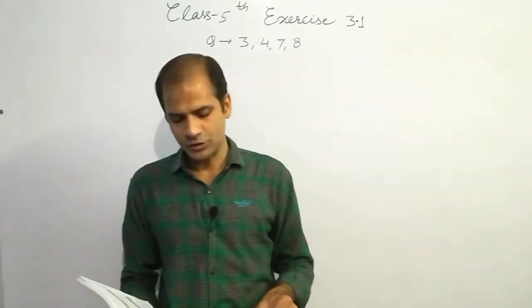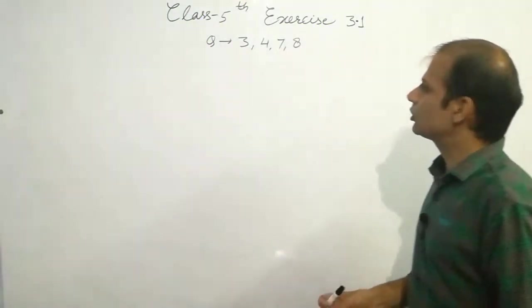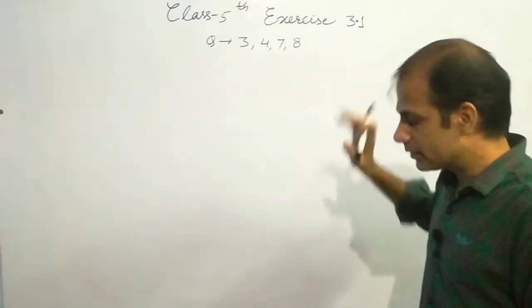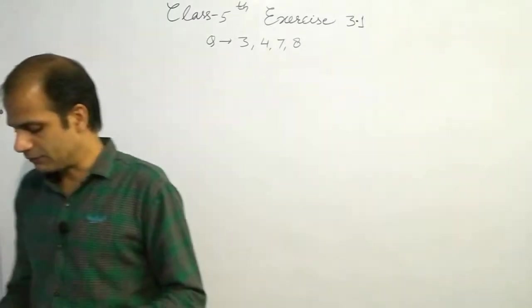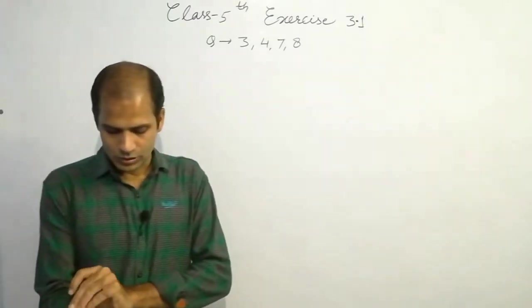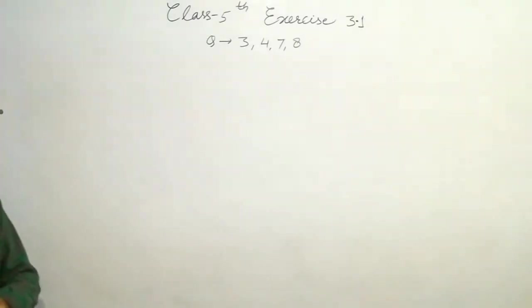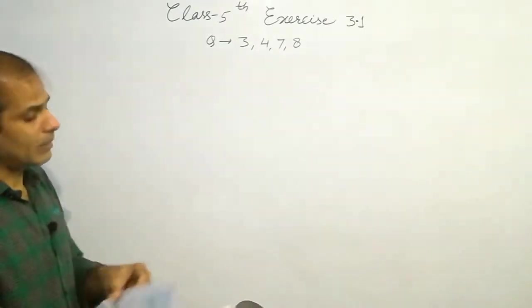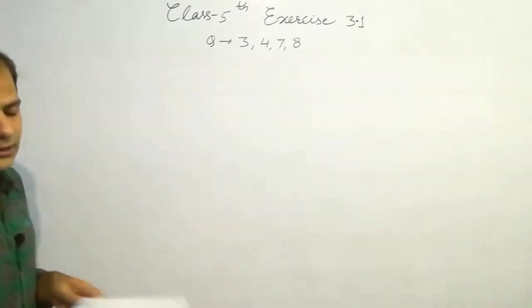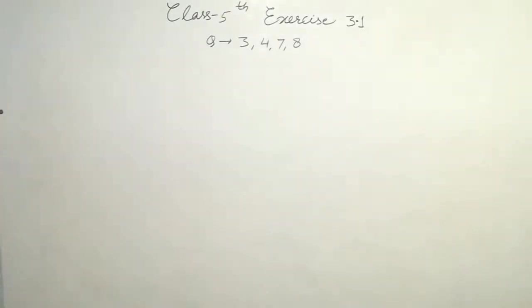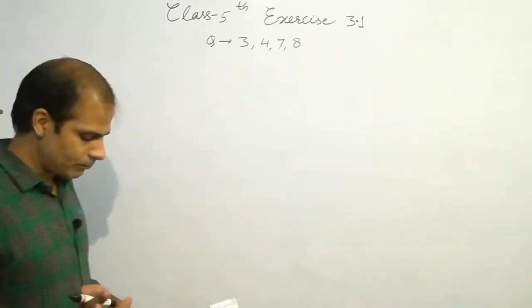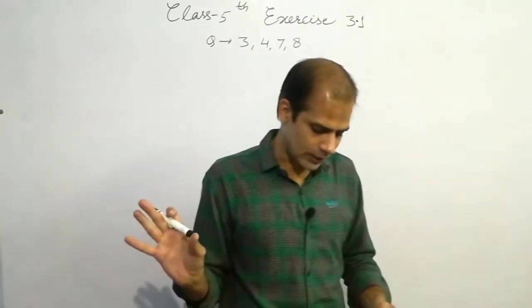Hello everyone, in this video I am going to solve question number 3, 4, 7 and 8 of exercise 3.1 from class 5 textbook from page number 21. This question is on page number 21 and remaining questions are on page number 22. This is exercise 3.1, all these questions are related to multiplication, these are the easiest questions. So focus at the board.